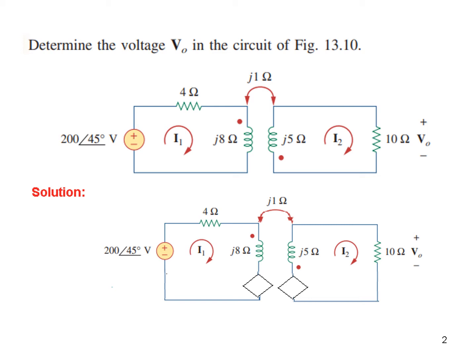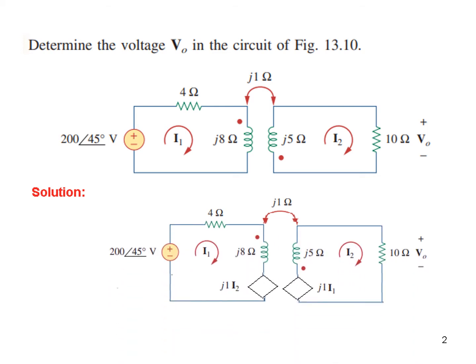So let's write their values. The value for this one will be mutual inductance M, j1 multiplied by current I1, so it is j1 multiplied by I1. And similarly this one will be j1 multiplied by current I2.